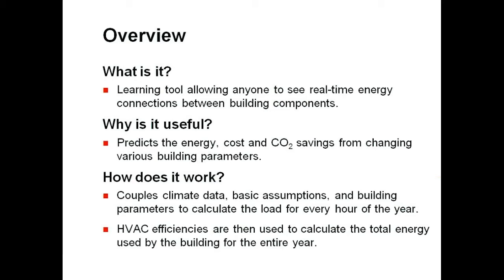The calculator itself predicts the energy, cost, and CO2 savings associated with changing the parameters of a building's design. The calculator works by coupling location-specific climate data — such as what the temperature is outside — a few simplified assumptions, which are all listed on the website, and the listed design inputs to calculate the building's load for every hour of the year. The HVAC efficiencies are then used to calculate how much energy this load entails, and from there we use a simple equation to calculate the building's annual cost and CO2 emissions.